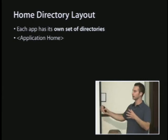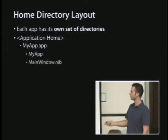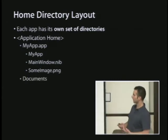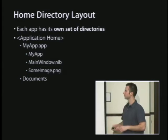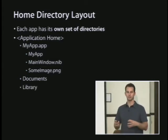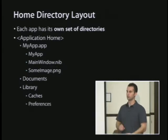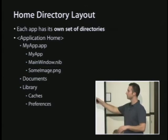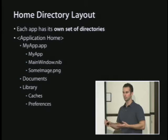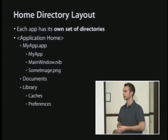Every application on the iPhone has its own virtual Unix home directory. At the top there's the application home directory — a non-human-readable hex string — inside a certain path on your iPhone file system. That contains your application bundle with your app binary and resources like nibs and JPEGs. Below that is the Documents folder, the main place to put anything your application writes. There's also the Library directory with subdirectories like Caches and Preferences, where NSUserDefaults go.